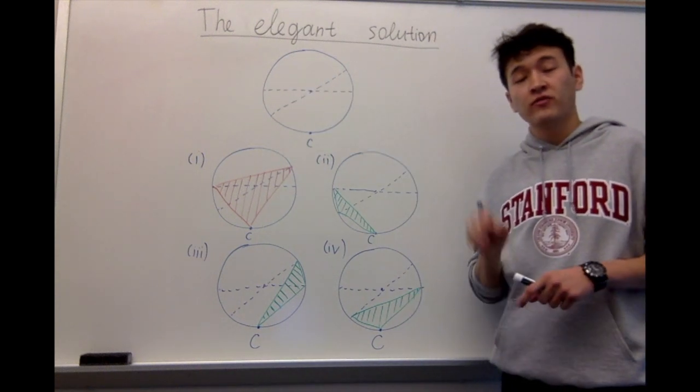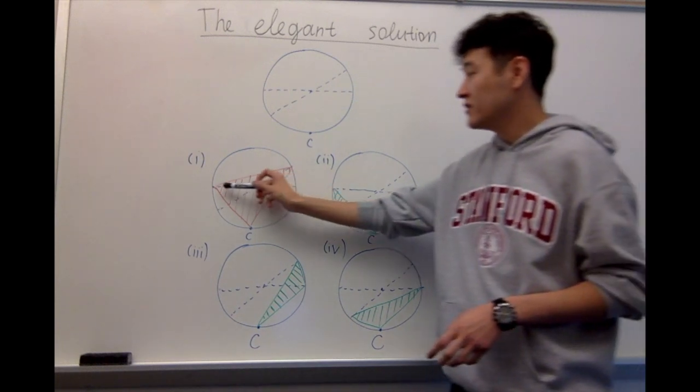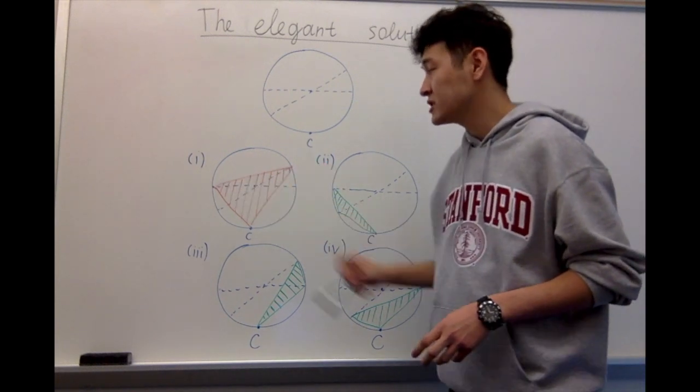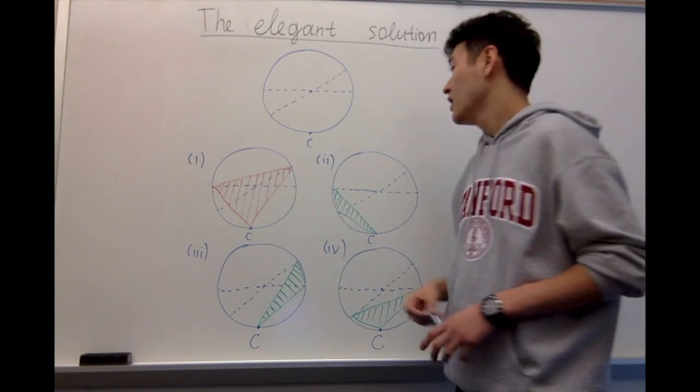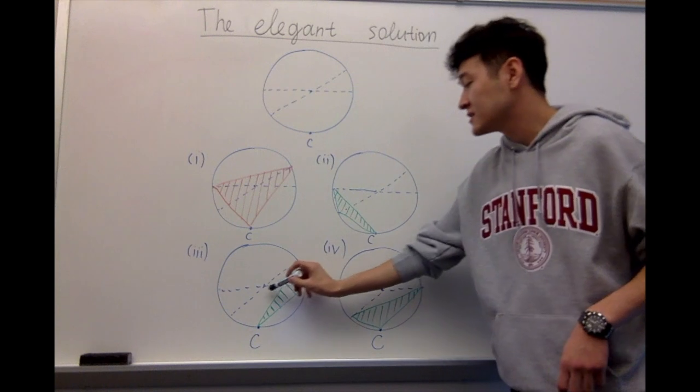Notice that there are only 4 possible cases. Surprisingly, only in one case does the triangle formed from these three points contain the center. In the remaining three cases, the triangles do not contain the center.